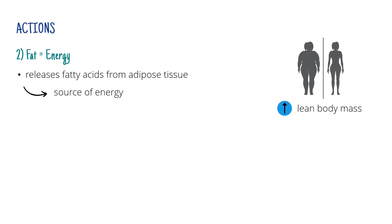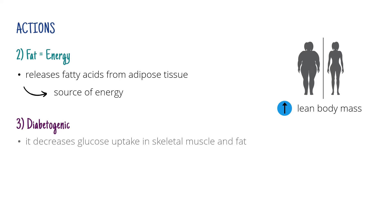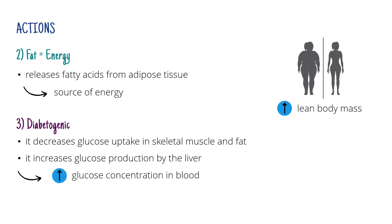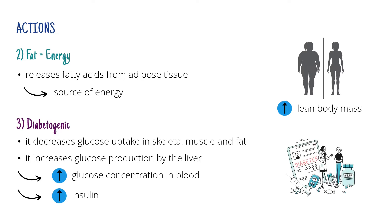Its third effect is quite interesting because it's called diabetogenic. Growth hormone decreases absorption of glucose in skeletal muscle and adipose tissue and it also increases glucose production in the liver. As you can imagine, if the organism doesn't absorb that much glucose and it actually produces even more, we're left with a higher concentration of glucose in blood. For that reason, more insulin needs to be secreted. And you know that if someone has diabetes, they have a very similar problem — high concentration of glucose and not enough insulin or the tissue is resistant to it. So this is very similar and that's why it's called diabetogenic.